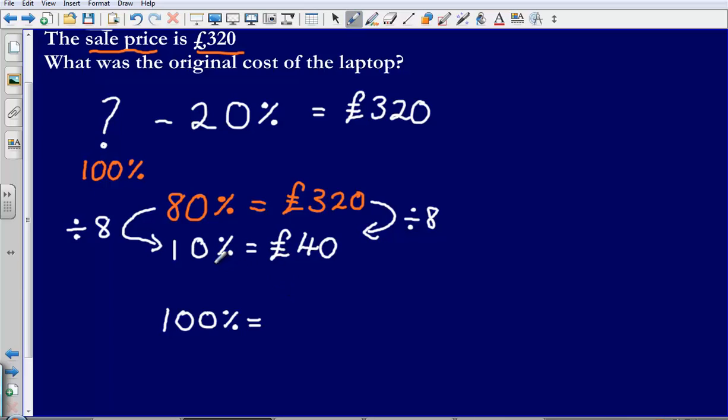So what I then need to do is, okay, well if I know that 10% is £40, that means that 100%, that must be 10 times as much, that must be 400. So my original cost of the laptop, all I have done there is times by 10, my original cost of the laptop would be £400.